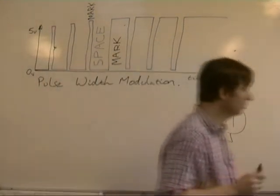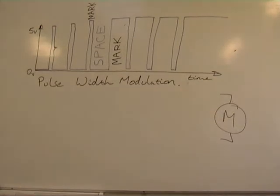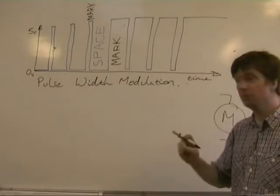One method we can use to control the speed of a motor is pulse width modulation. It basically works by switching on and off the motor.